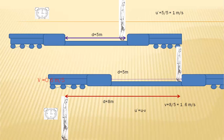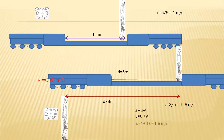Using u = u' + v, substituting u' = 1 m/s and v = 0.6 m/s, we get u = 1.6 m/s, which confirms the result.